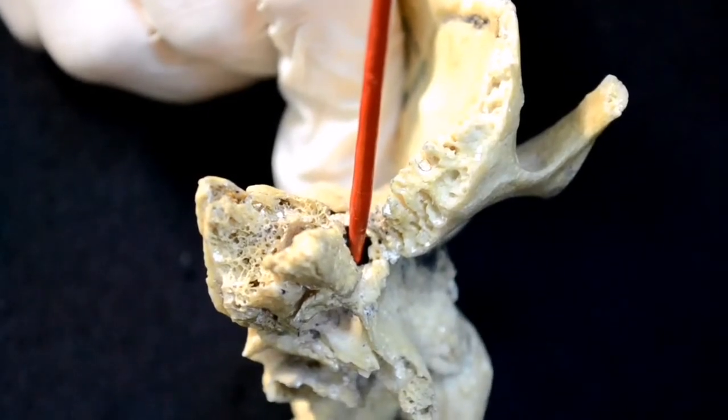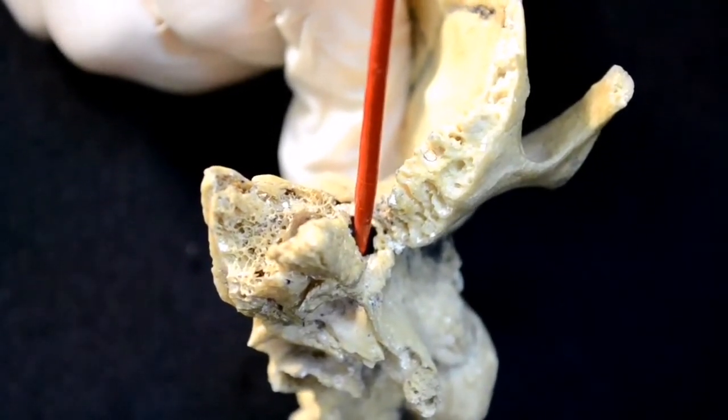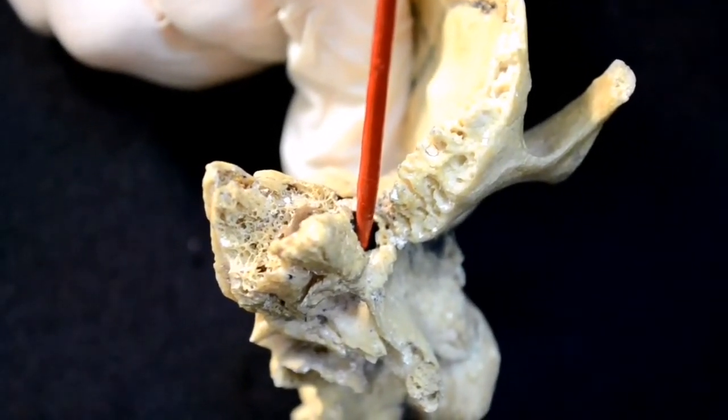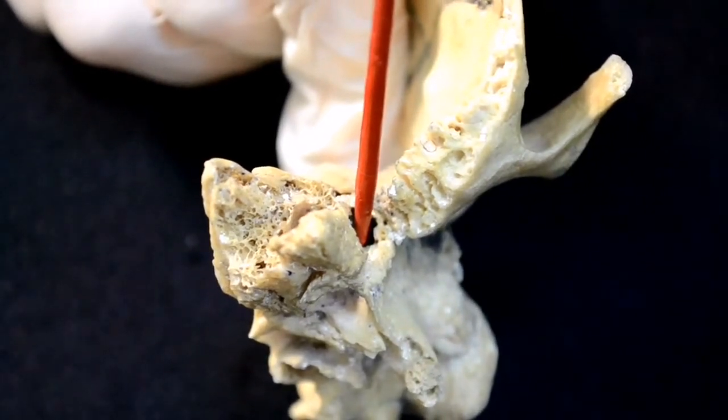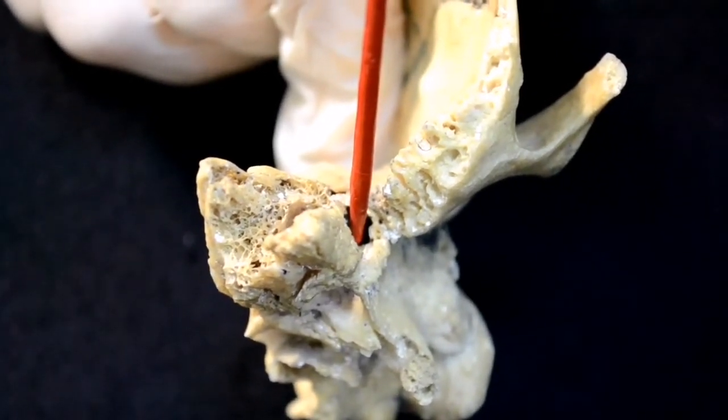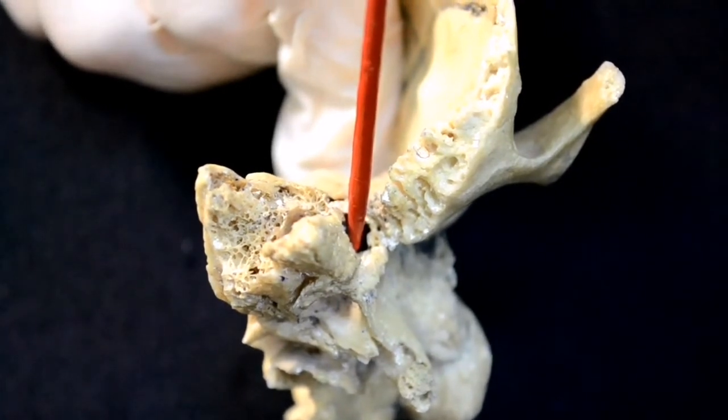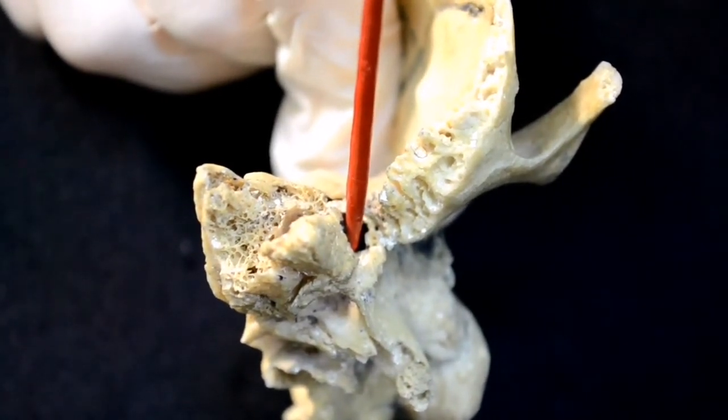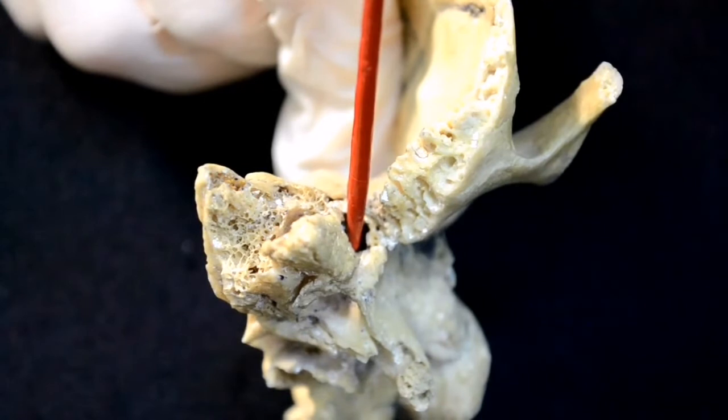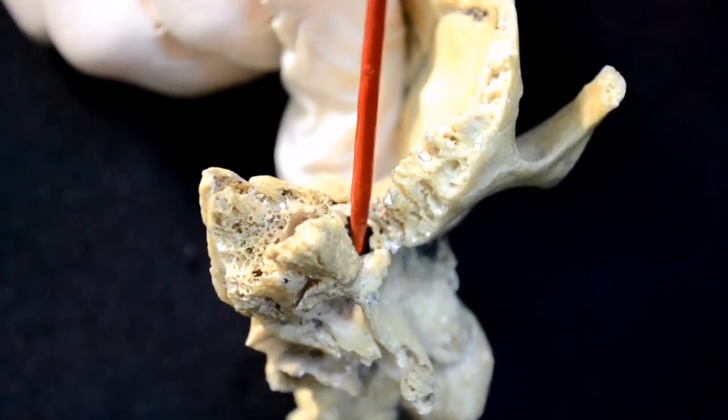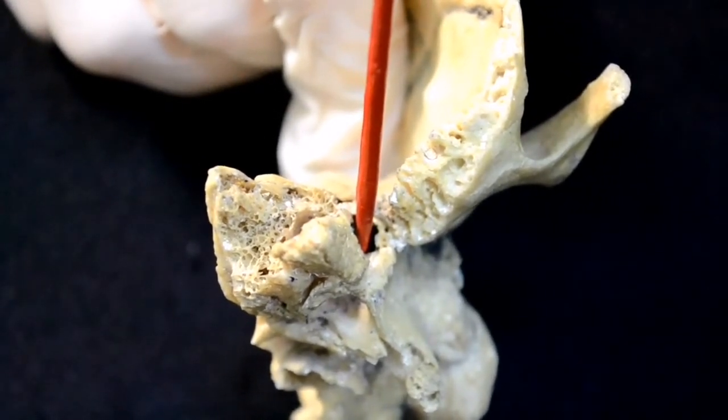Canalis musculotubarius originates at the notch between the squamous and pyramid next to the anterior part of fissura petrosquamosa. The canal divides into two semicanals, upper and narrow.